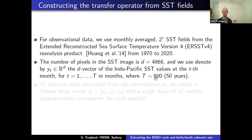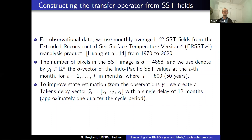The ENSO cycle is around four years, so with only 50 years of data we're pulling out a cycle using only about 12 approximate cycles. To improve state estimation and know where we are in this cycle, I make a Takens delay vector with a single delay of 12 months — one quarter of the cycle period. For anyone familiar with Takens delay, this is completely standard when trying to recover a cycle.